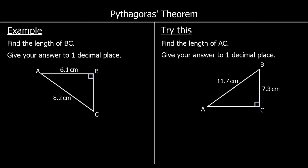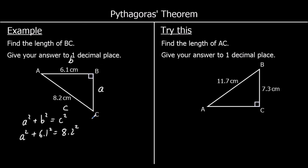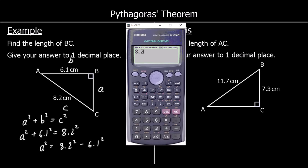Another example — this time we're giving our answer to one decimal place. We're finding one of the shorter sides. We can see that we know the hypotenuse, the one opposite the right angle. A squared plus b squared equals c squared. Substituting in, a squared plus 6.1 squared equals 8.2 squared. To get a squared by itself, we take away 6.1 squared from both sides. So a squared is 8.2 squared minus 6.1 squared. Typing that into the calculator gives 30.03.